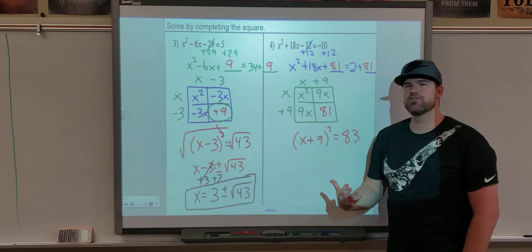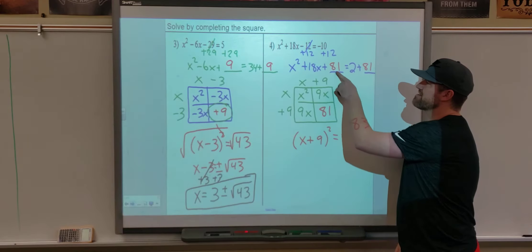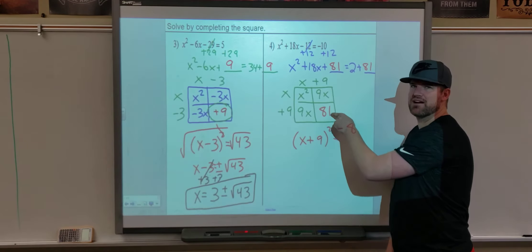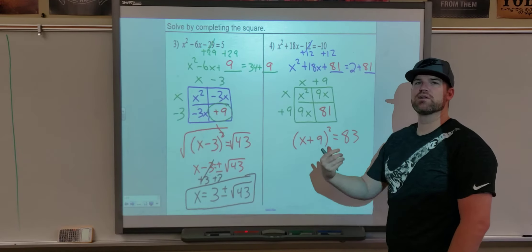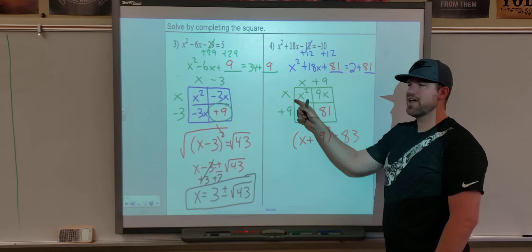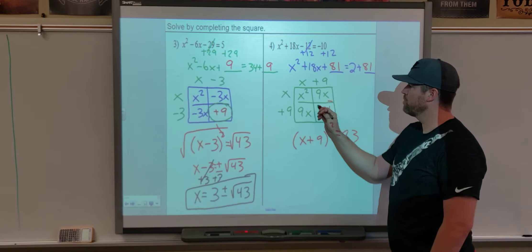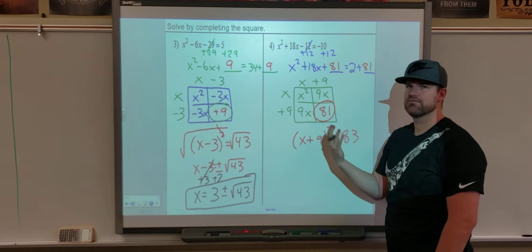Just a quick side note, the reason we call it completing the square is we're finding this number that literally completes this square and makes it a perfect square. So anytime that we're doing a problem where we're completing the square, try to remember that that means we need this to be a perfect square, and we're figuring out what number completes that square so that it is, in fact, a perfect square.